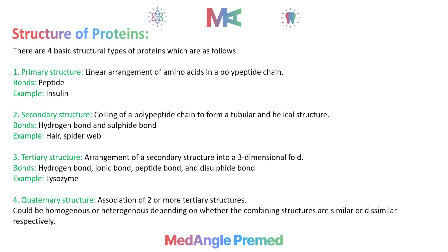And if we have a quaternary structure made of units where one and two types of units are different from each other, then this is called heterogeneous quaternary structure.